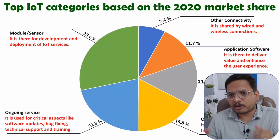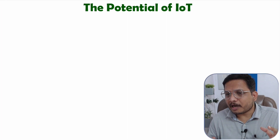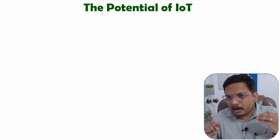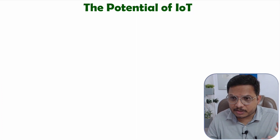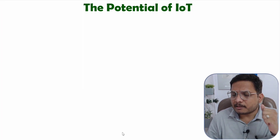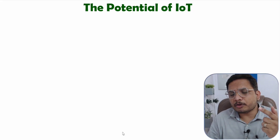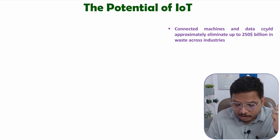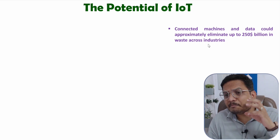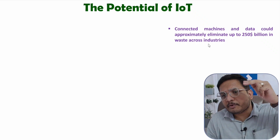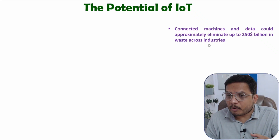Now I'll explain the last part of this video: the potential of IoT. With the use of Internet of Things, we can upgrade our services, applications, and work life, leading to enormous savings. That is why people will definitely use IoT services in the future. It is estimated that with connected machines and data, we can eliminate up to 250 billion dollars of waste across industries — this is the minimum estimate provided by General Electric.